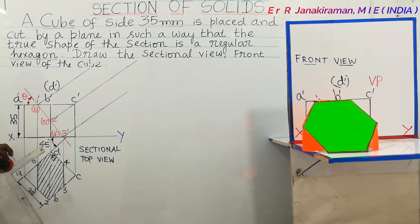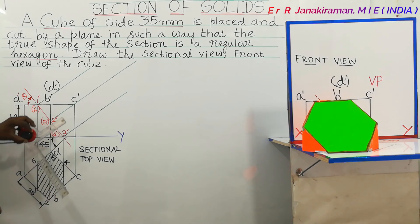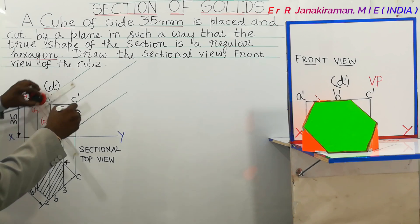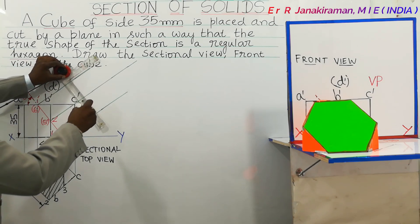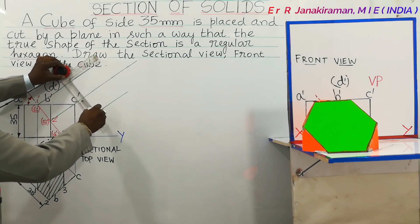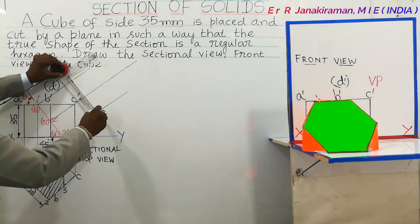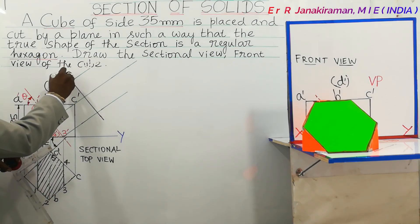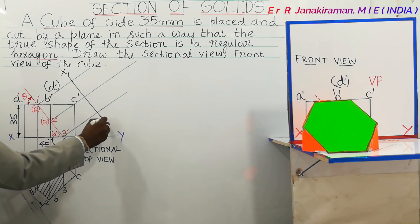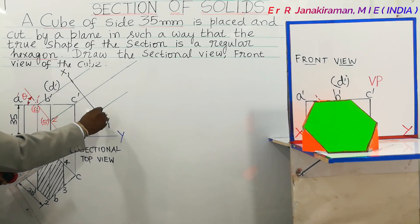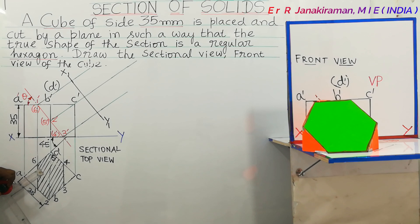Next I am going to draw one more line called a reference line, apart from this front view. Without touching the view, draw it here. This is the reference line, marked as X1–Y1. This particular point is Y1. The reference line is like the XY line.